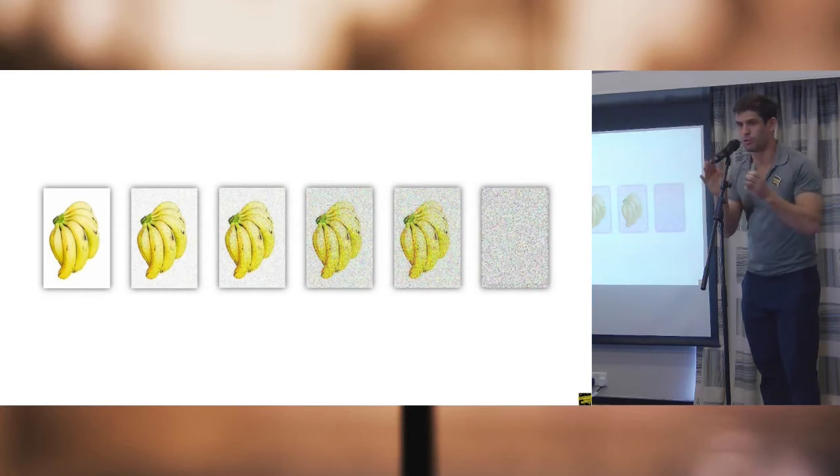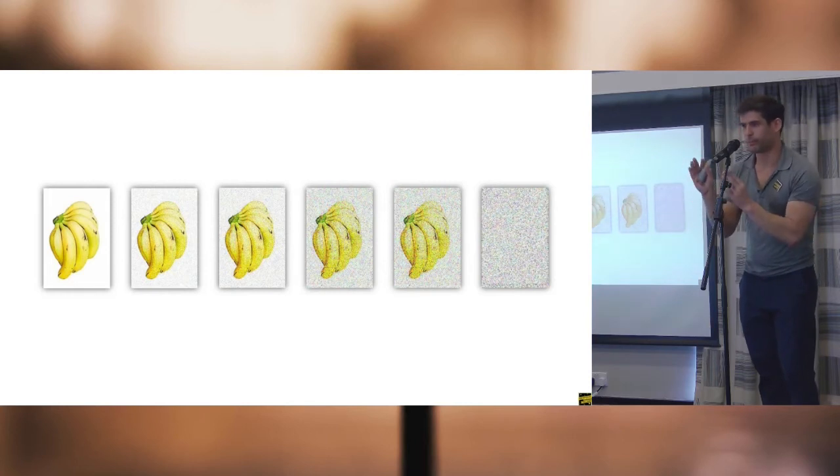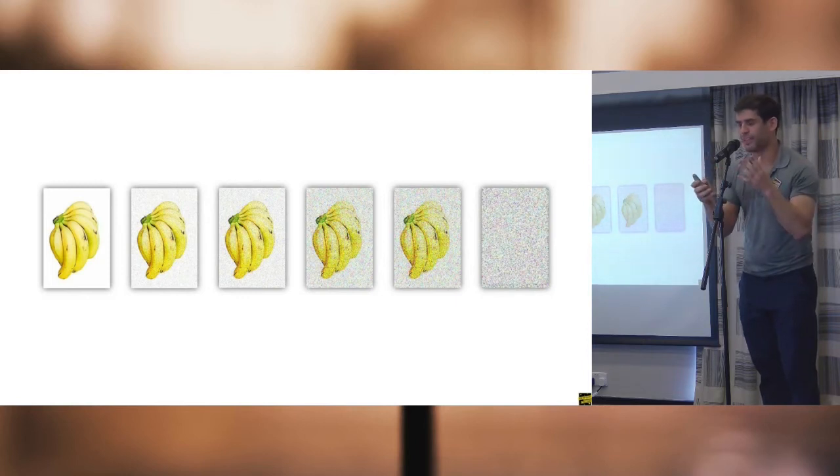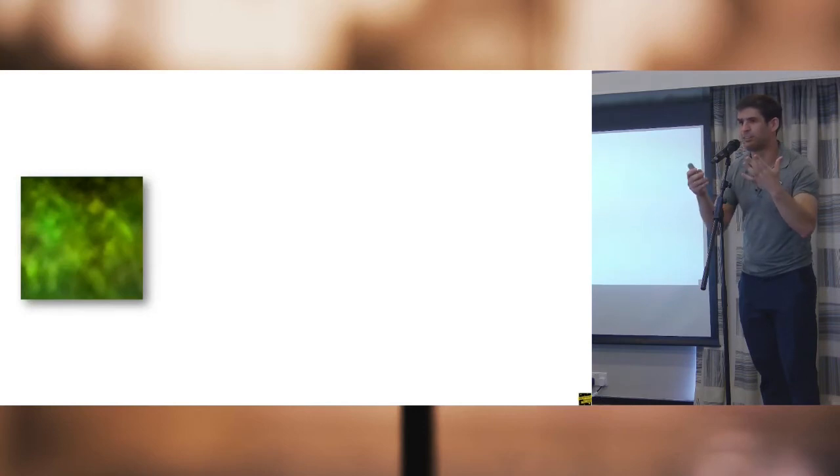So you would give it the perfect bananas with no noise and a very slightly noisy image of the banana. And you teach it to remove the noise. And once you've done that, you take the pair of medium noisy bananas and slightly noisy bananas and teach it to remove the noise. And you go all the way back until you've got my TV is broken levels of noise. And once you've done that, the great thing is you can give it any noise. And like Michelangelo seeing David in the marble, it can see the bananas in the noise.